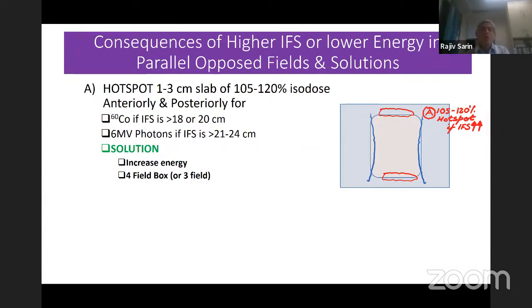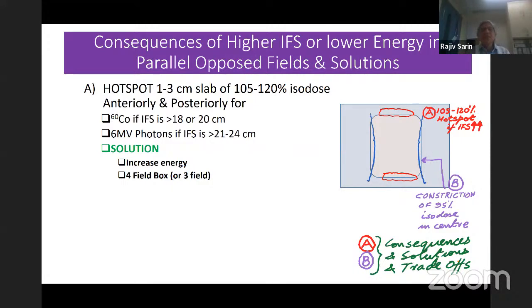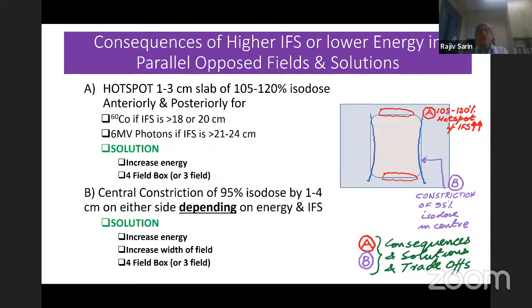Second consequence is the constriction of the 95% isodose. Because of this, you may have underdosage — for example, lateral pelvic wall nodes may not be covered by 95%, though they might get 92–93%. The 90% isodose is more or less straight. The central constriction can be quite substantial — with cobalt-60 and 24 cm interfield separation, the 95% isodose comes 4–5 cm inside, which is not trivial. However, with 10 MV and 20 cm separation, there is hardly any constriction.